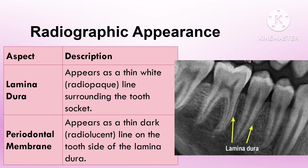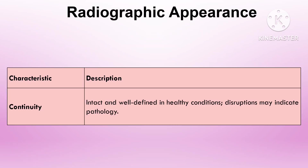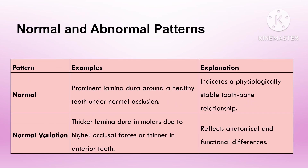The radiographic appearance of the lamina dura is a thin radiopaque line that lines the tooth root, representing the dense cortical bone lining the socket. In a healthy tooth, this appears intact, continuous, and well-defined. It is seen adjacent to the periodontal ligament space, which appears as a dark or radiolucent line.